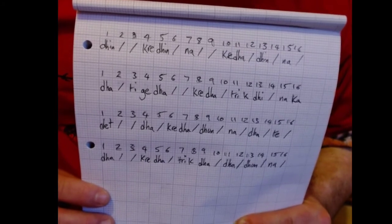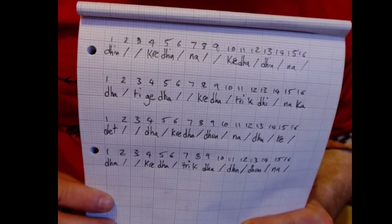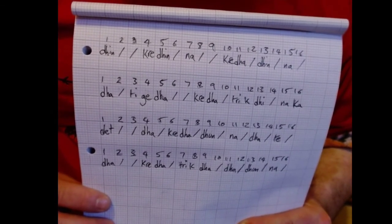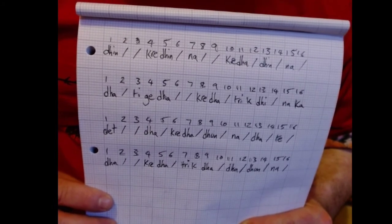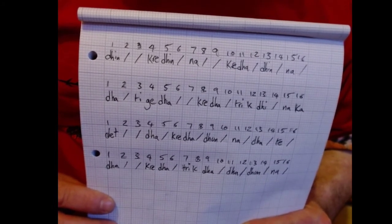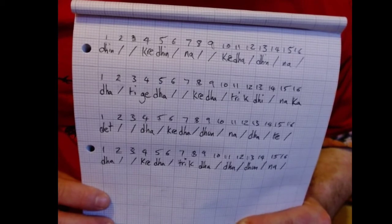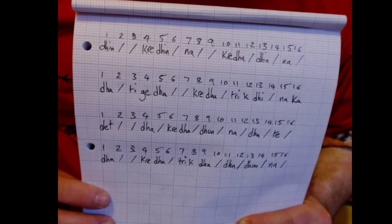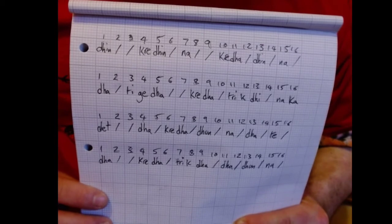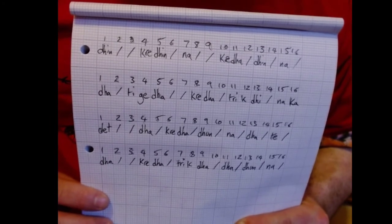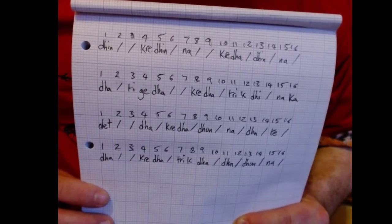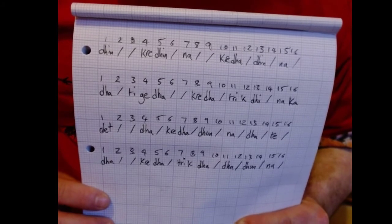And so I will explain the bols. Dhin is Ti and Gi together. Dhin, the first beat Dhin. Kr is a Ka and a Te played slightly staggered. Kr. So it's Dhin, Kr, Dhin, like this.